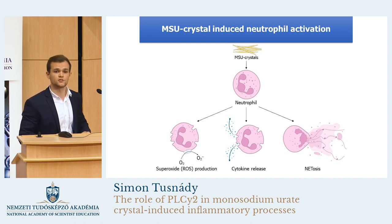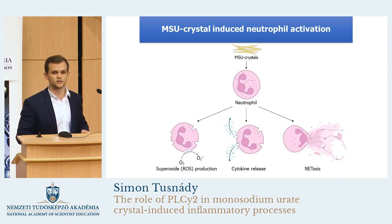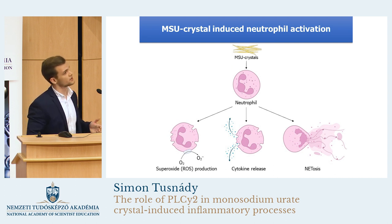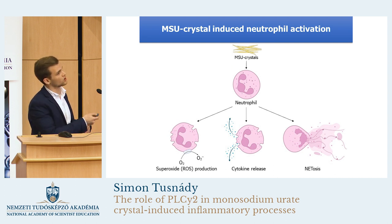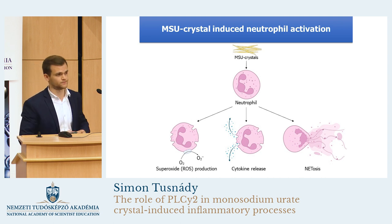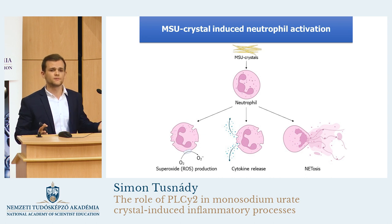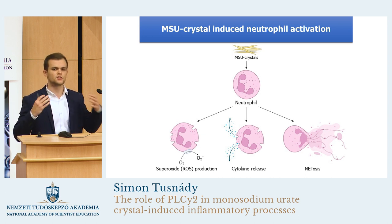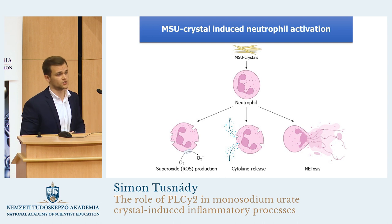The third one is the process of NETosis, which is a very unique process. This is an alternative type of cell death, which is typical for the neutrophils. During the process, the cells externalize their DNA and form the so-called NETs, or neutrophil extracellular traps. We can describe this mechanism like the neutrophils shoot a sticky web towards the pathogens and trap them into their own DNA.